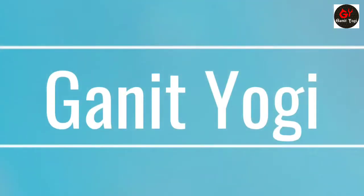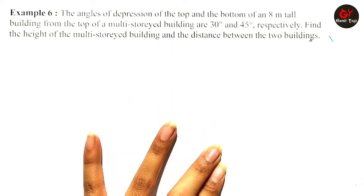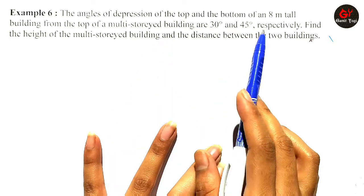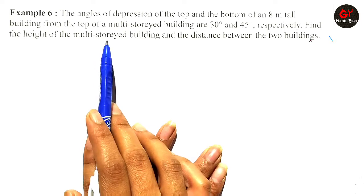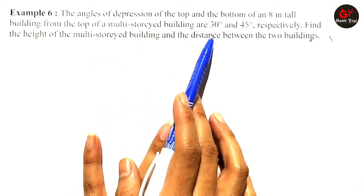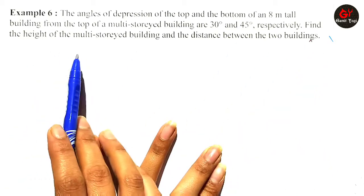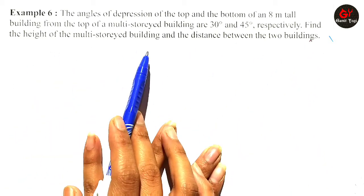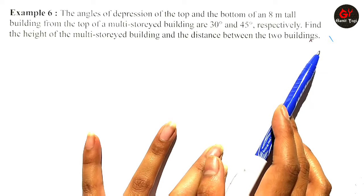Hello guys. The next problem is: the angles of depression of the top and the bottom of an 8-meter tall building from the top of a multi-storied building are 30 degrees and 45 degrees. Find the height of the multi-storied building and the distance between the two buildings.